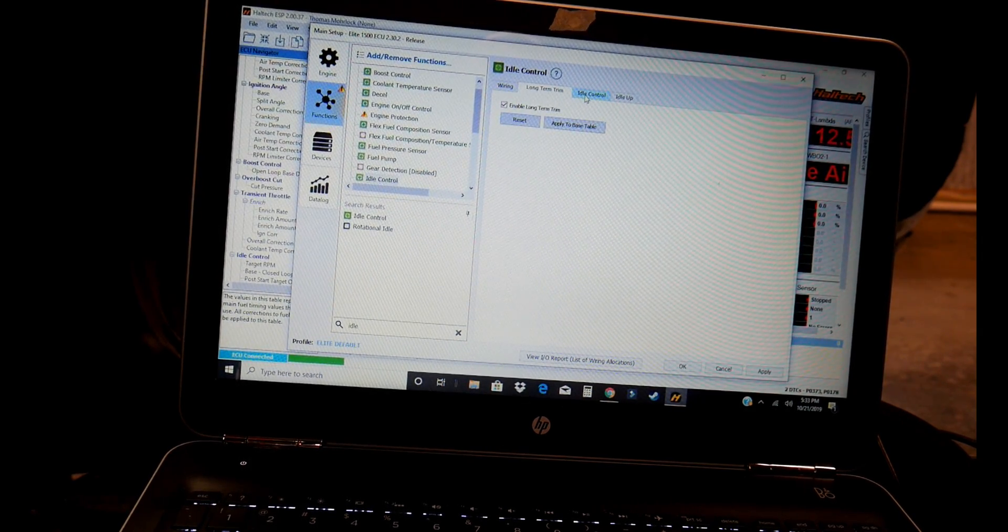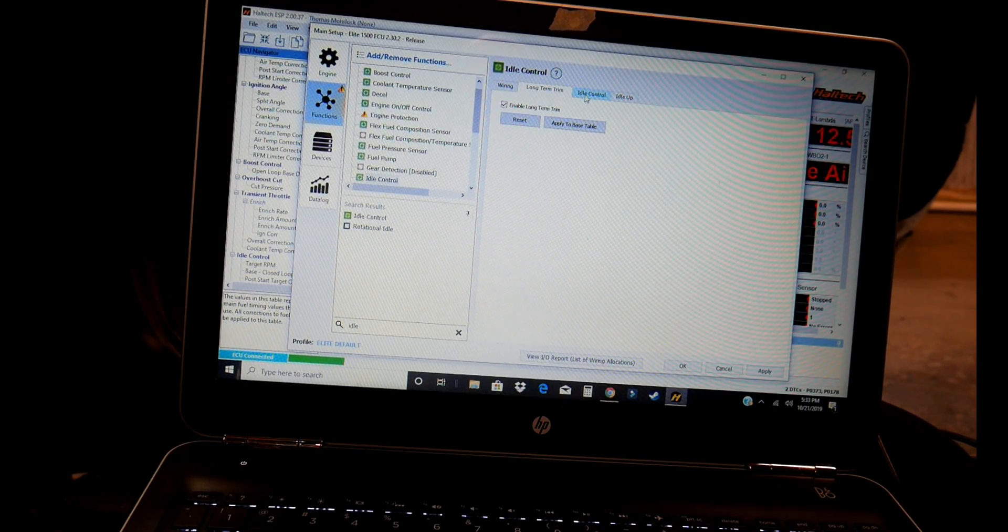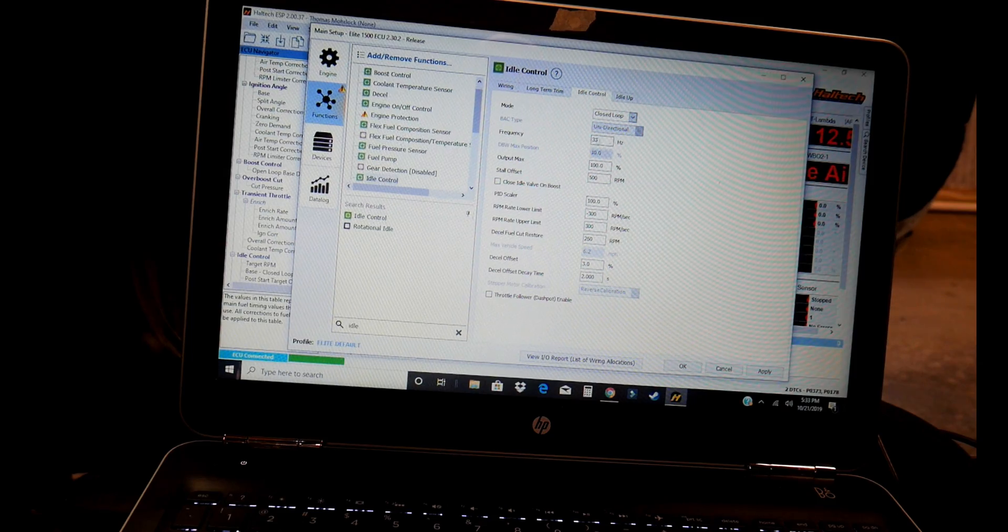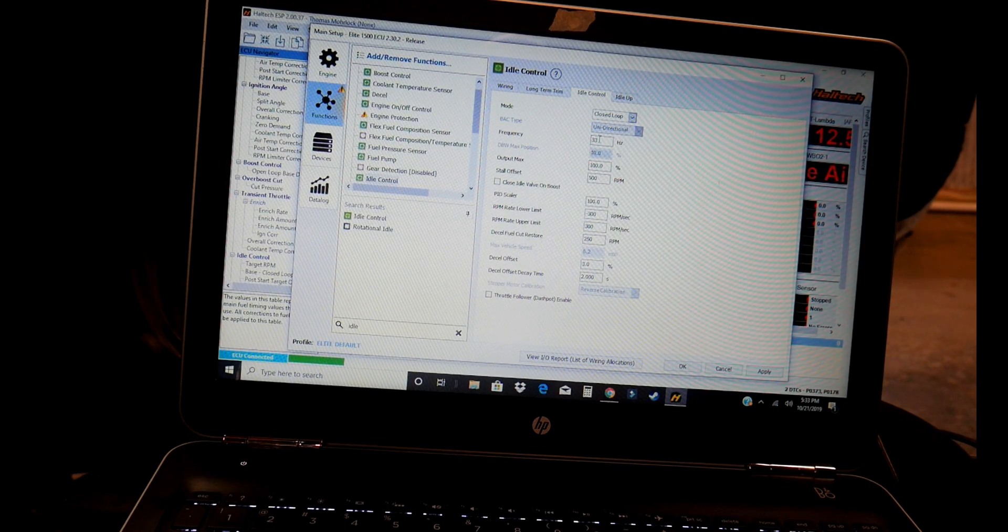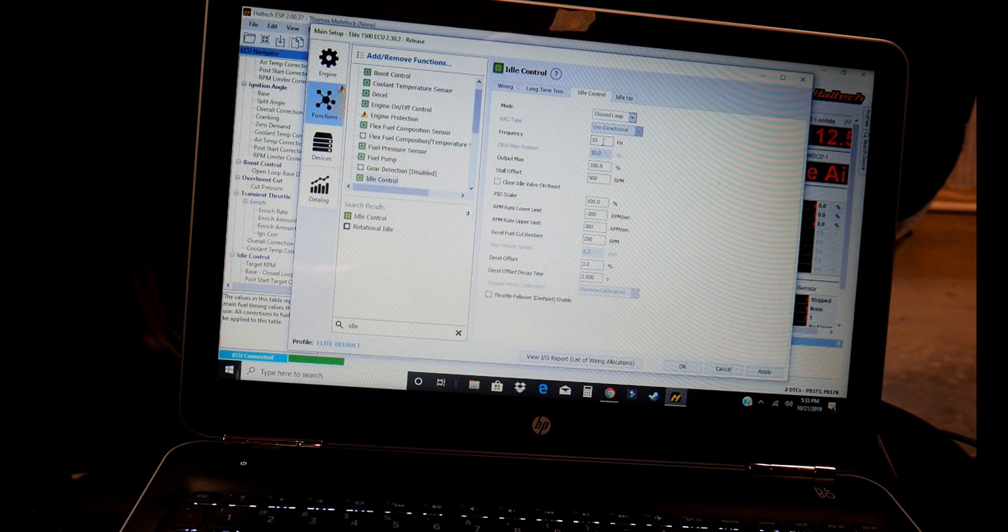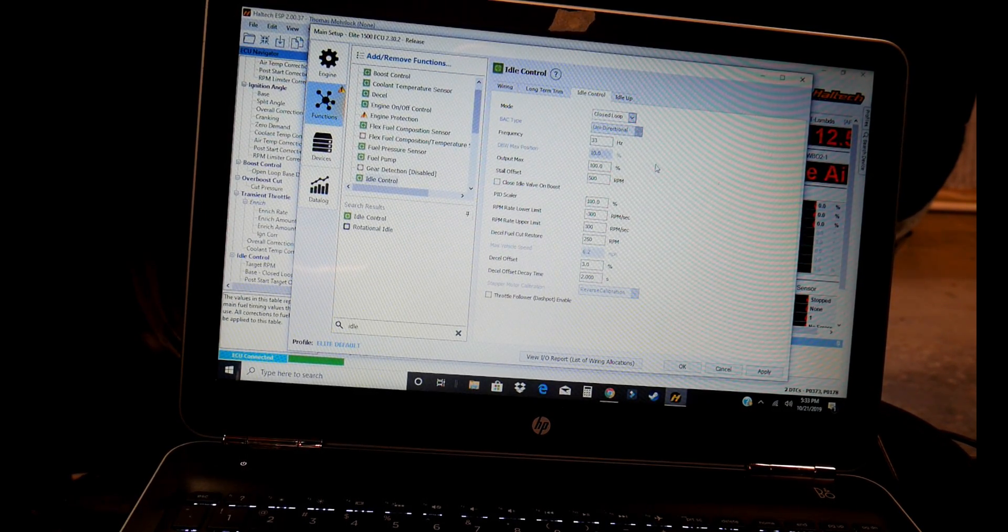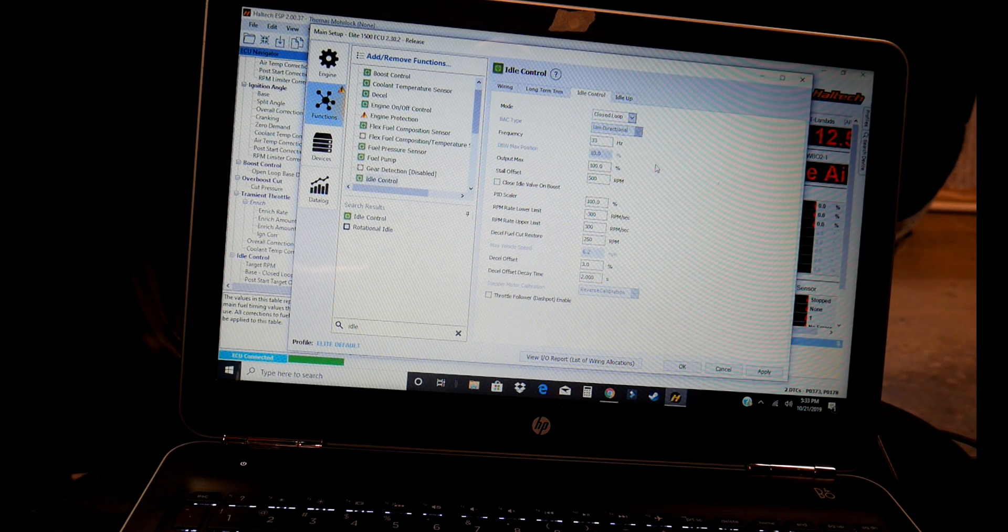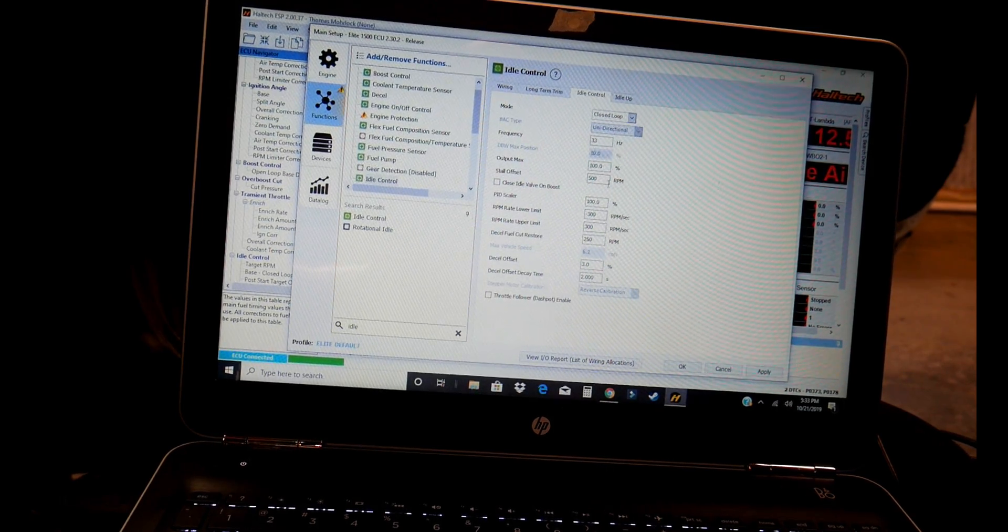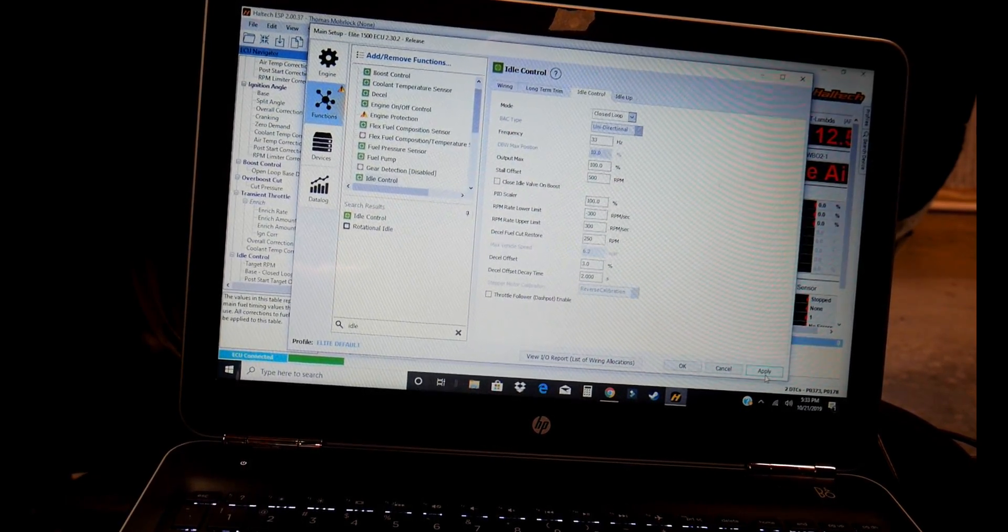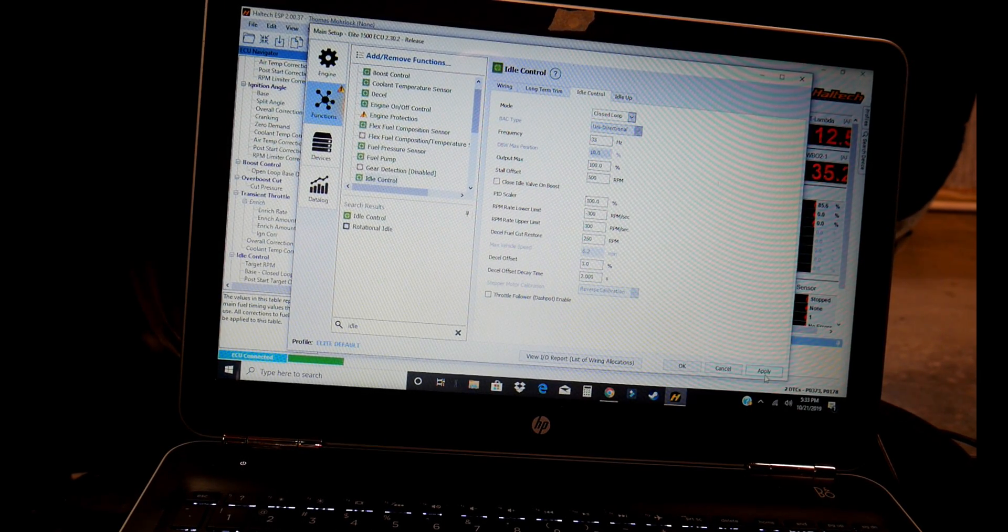Long-term trim is enabled from the closed loop O2 function with the wideband installed. We're going to go to idle control and I already preset this to 33 hertz. I'm going to mess with a few settings because there's multiple resources online that say different settings to make this successful. And what I'm going to do now is I'm going to go ahead and I set the stall offset to 500 just as a first setting. We're going to go ahead and apply that. Reboot the ECU.